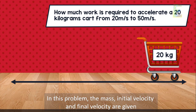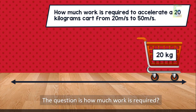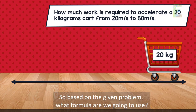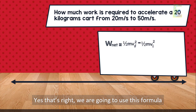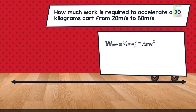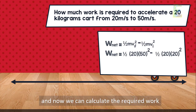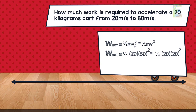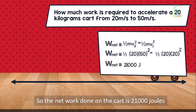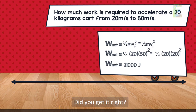In this problem, the mass, initial velocity, and final velocity are given, and we need to find how much work is required. We use the formula: net work equals one-half times mass times final velocity squared minus one-half times mass times initial velocity squared. With mass equal to 20 kilograms, initial velocity 20 m/s, and final velocity 50 m/s, the net work is 21,000 joules. Did you get it right?